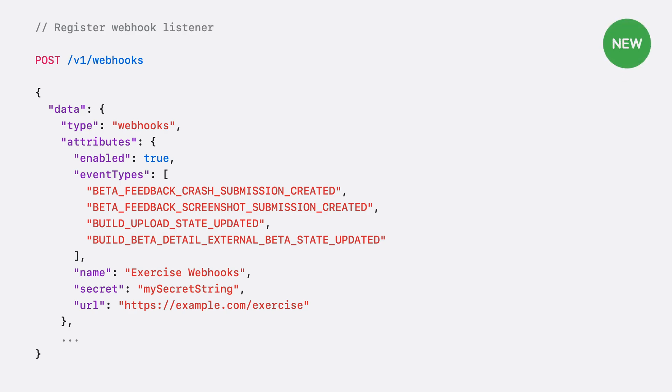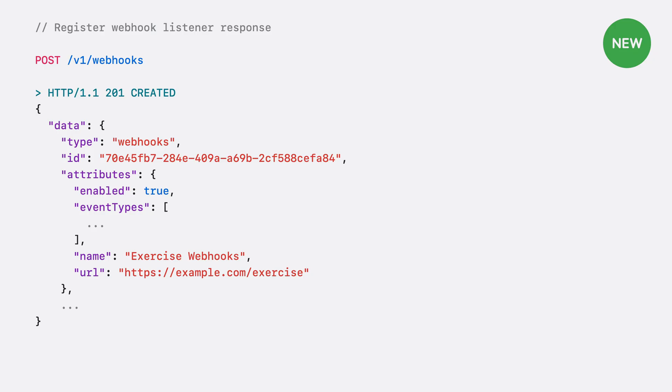You can also set up your Webhook using the API. This approach is particularly useful if you manage many apps or want to register Webhook listeners automatically for new apps. To register a Webhook listener with the APIs, you need to send a POST request to the Webhook endpoint. The attributes are very similar to what we saw in the UI: the event types you want to subscribe to, the secret App Store Connect will use to sign the event payload, and the URL of your Webhook listener. Upon successful Webhook creation, you will receive a 201 Created response. The payload will include the Webhook ID, which is necessary for managing the Webhook later.